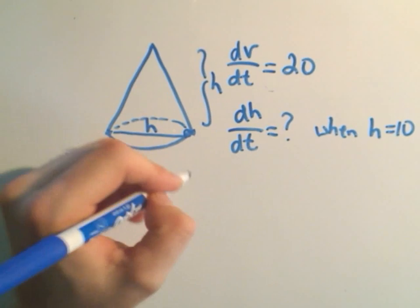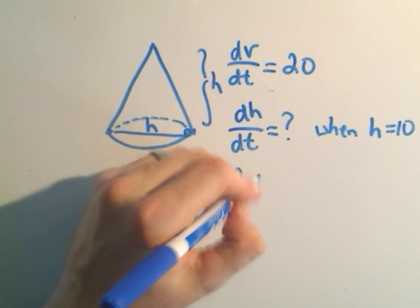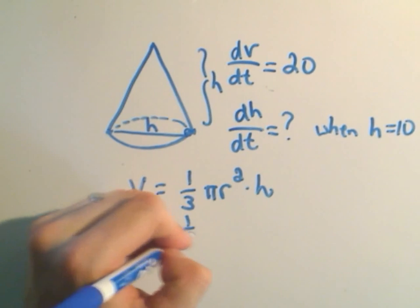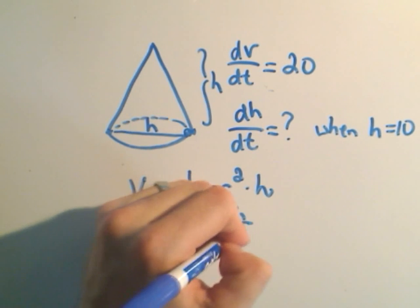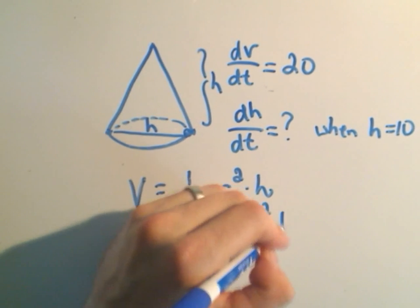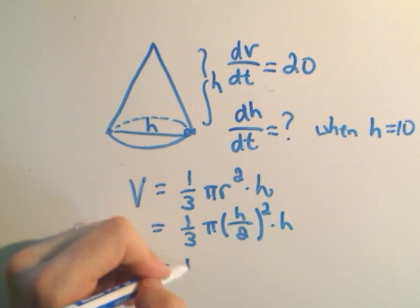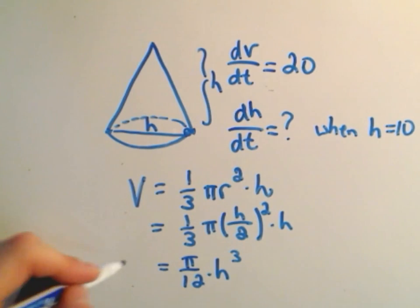The volume of a cone is 1/3 πr² times H. So just like before, the radius of this thing is going to be... the radius would simply be H/2 squared times H. If you simplify it down, 2 squared is 4, we'll get π/12 times H cubed. That'll be our volume.